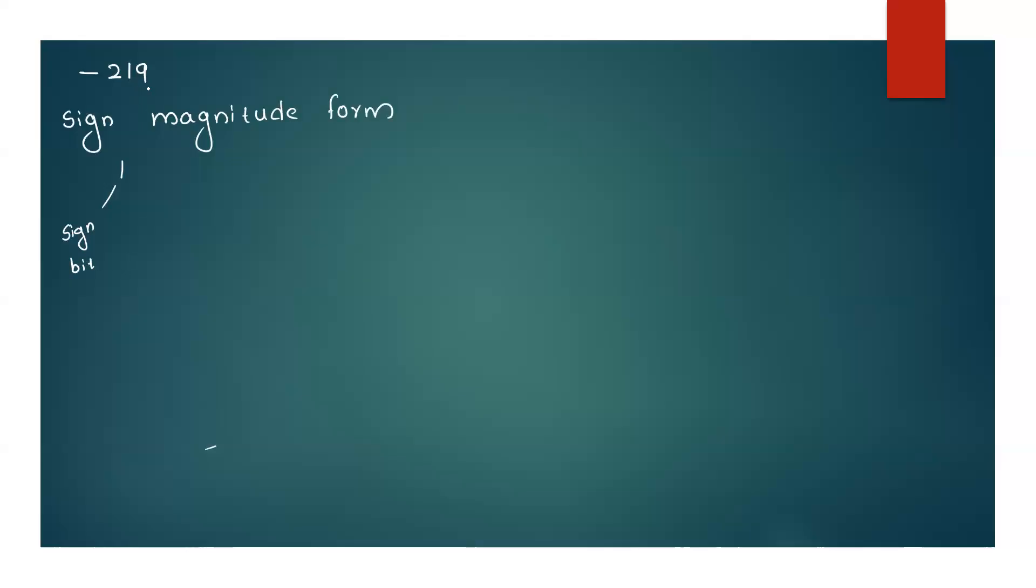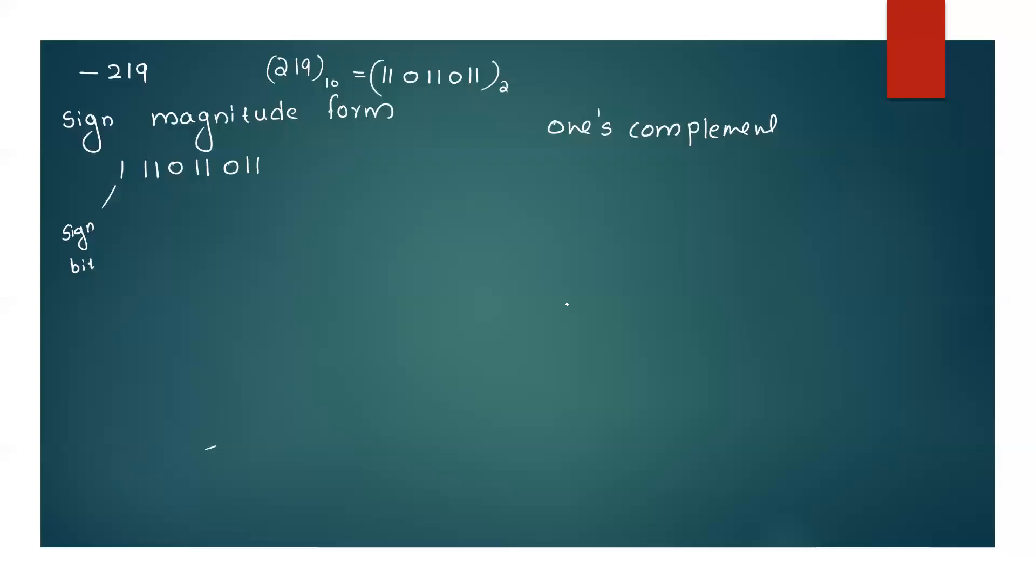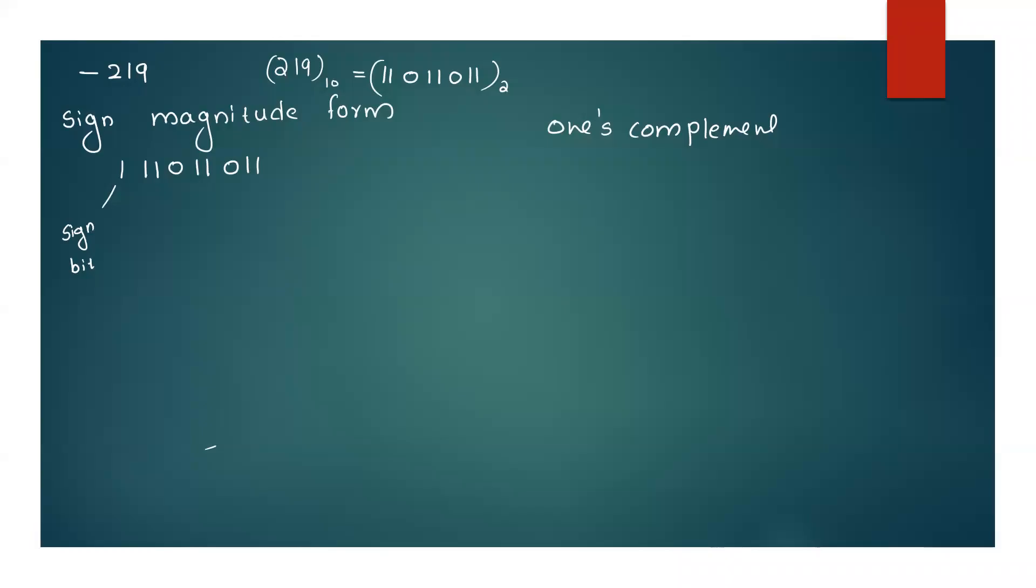Minus 219 is 11011011 and minus 114 is 11110010. This is the sign magnitude form. This is the one's complement form. Now, you can see the one's complement form.